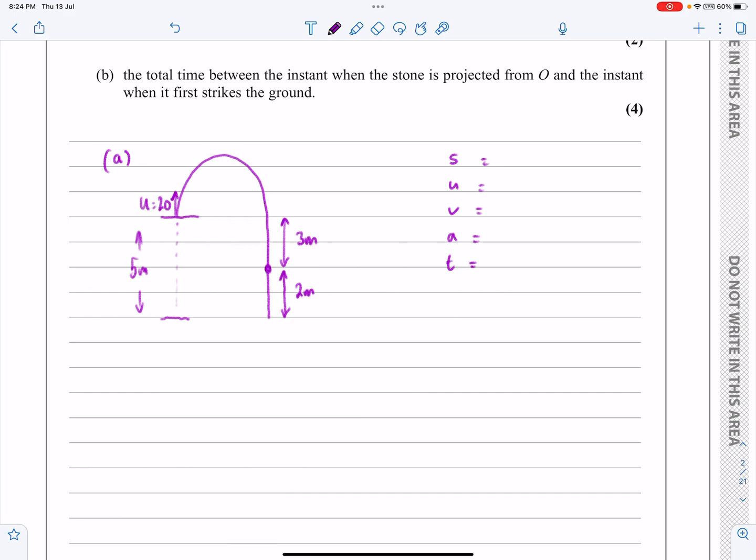If I've got motion that goes up and down, I always like to say which way I'm taking as being positive. So I'm taking upwards as being positive, and I'm basically considering the journey from there to there.